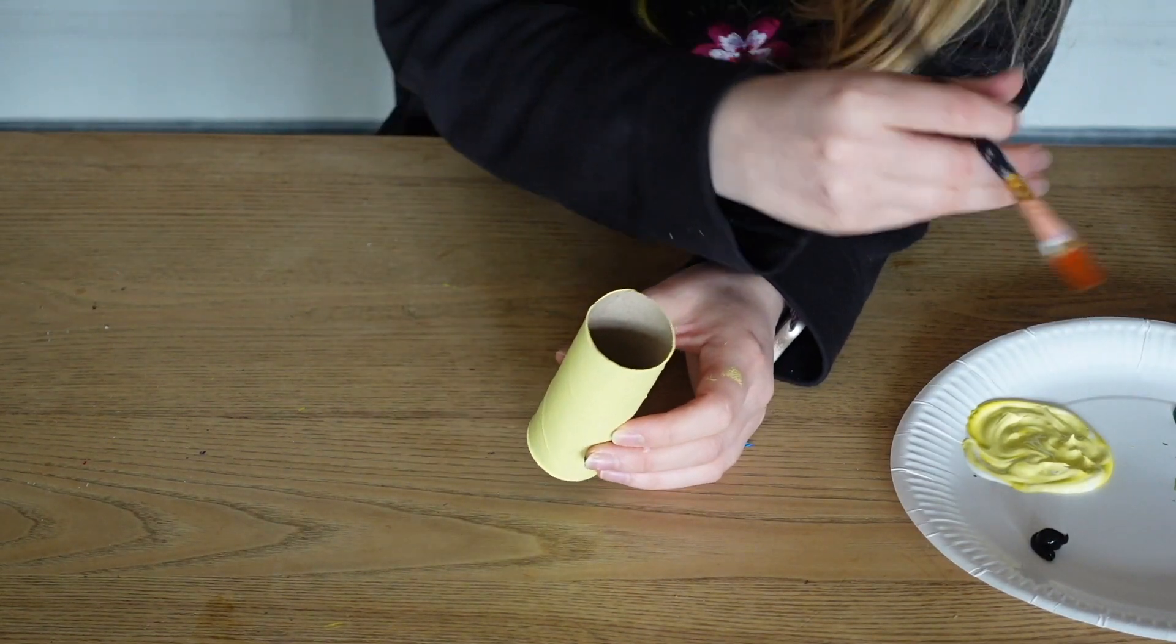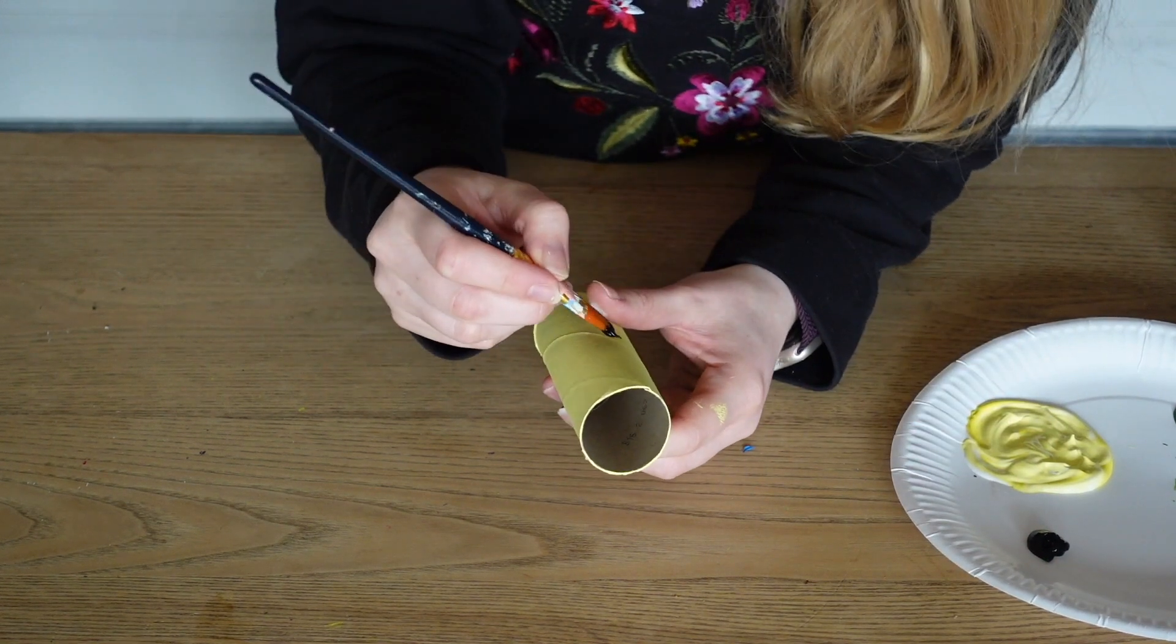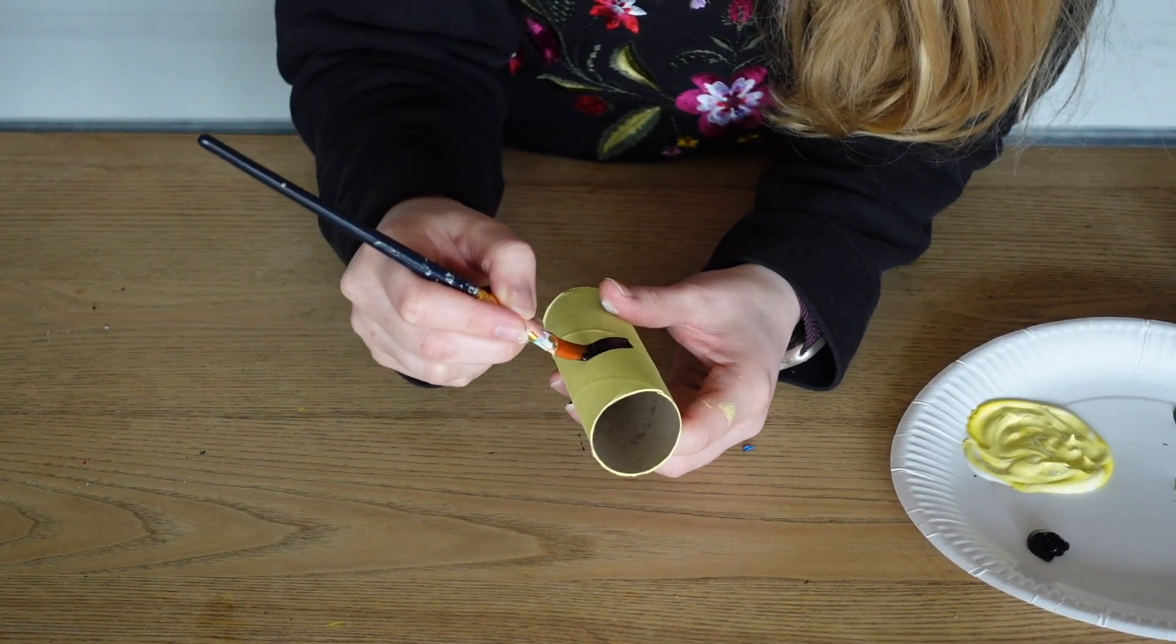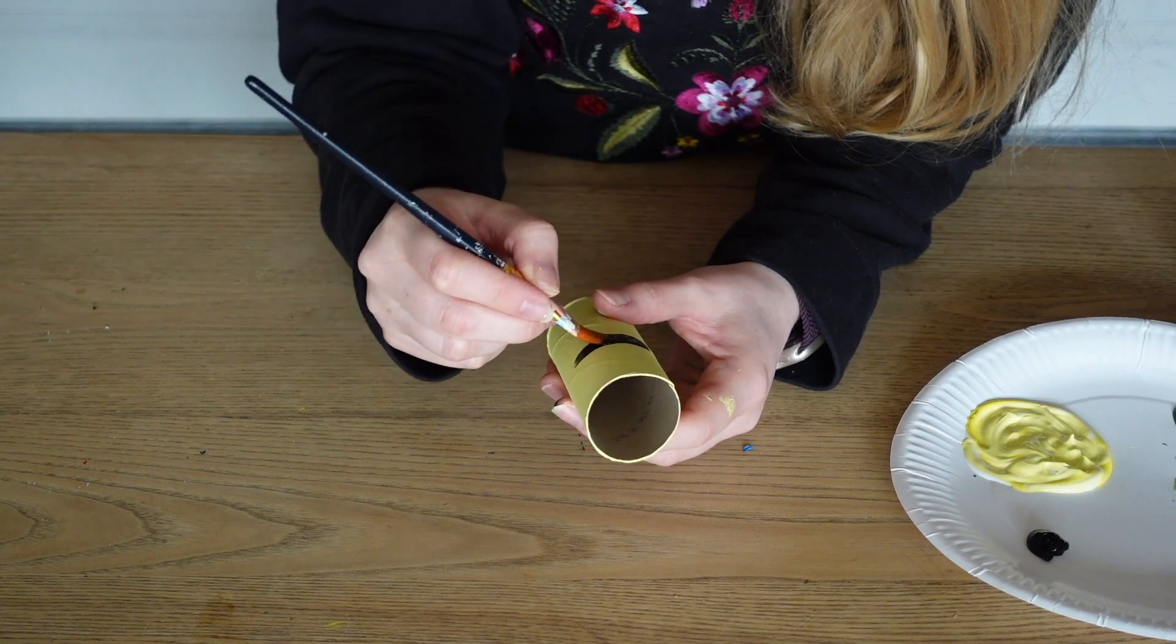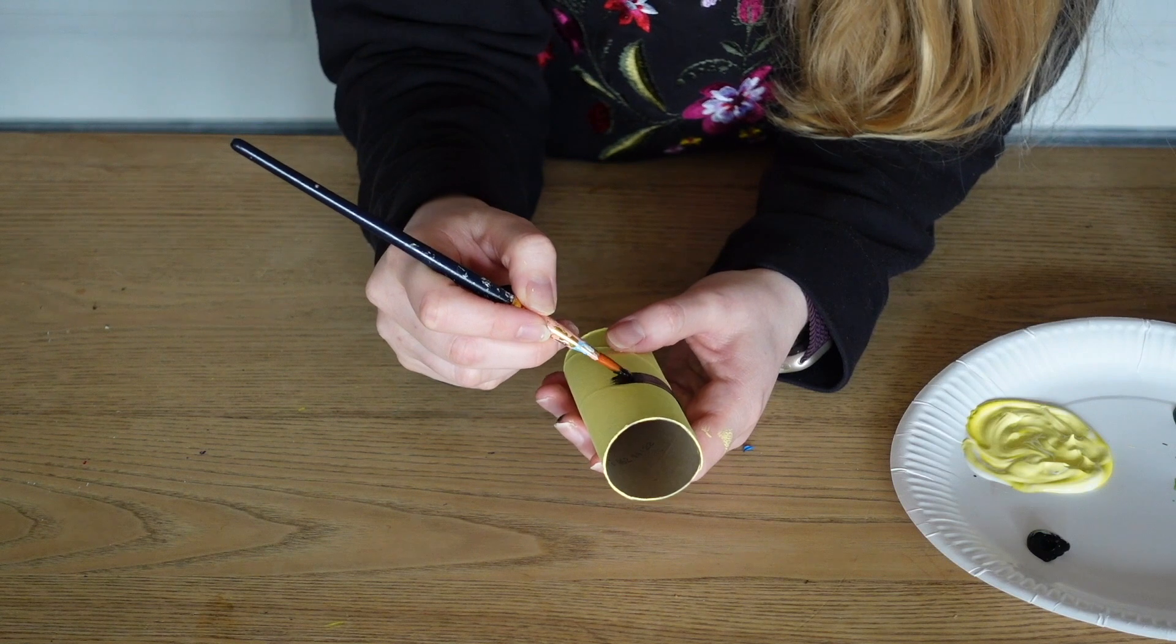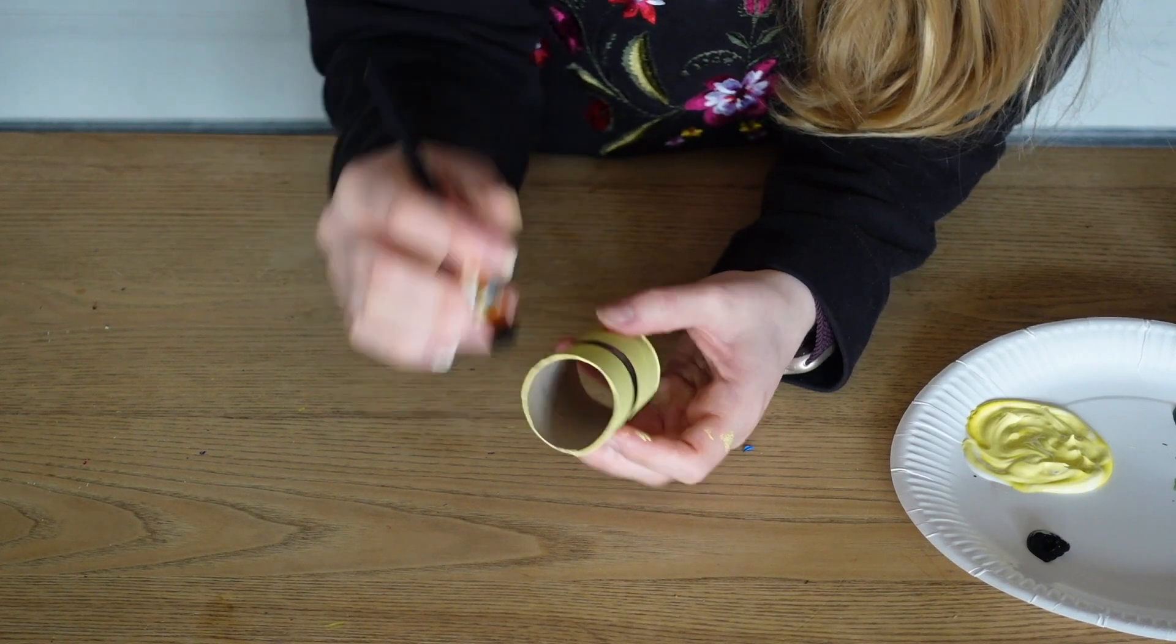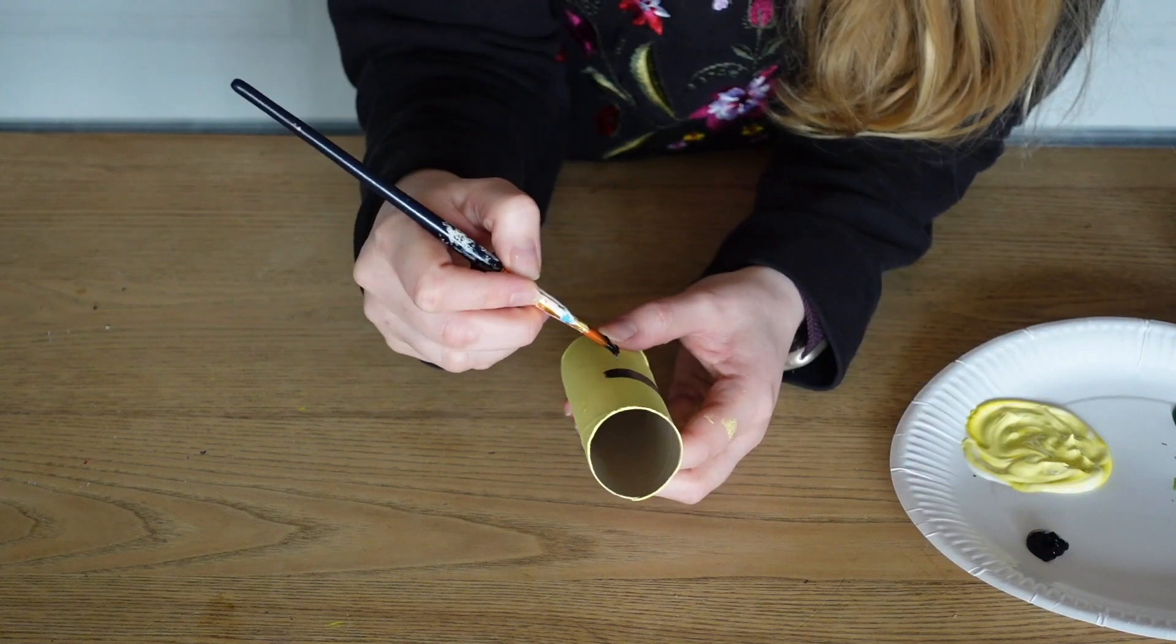For the next stage we're going to need to add the bumble bee stripes. So I've just got some black paint and I'm going to go around my toilet roll. Again, it's acrylic paint and dries quite quickly. Just be careful not to get it all over your hands.